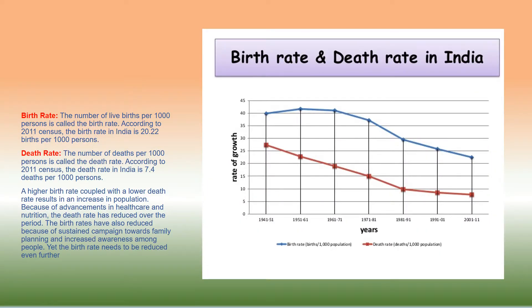Birth rate: the number of live births per 1,000 persons is called the birth rate. According to the 2011 census, the birth rate in India is 20.22 births per 1,000 persons. Death rate: the number of deaths per 1,000 persons is called the death rate. According to the 2011 census, the death rate in India is 7.4 deaths per 1,000 persons. A higher birth rate coupled with a lower death rate results in an increase in population.